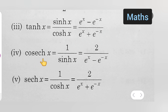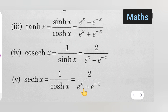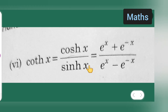The fourth one is cosec hyperbolic x, which is equal to 1 upon sine hyperbolic x, which is equal to 2 upon e raised to the power of x minus e raised to the power of minus x. The fifth one is sec hyperbolic x, which is equal to 1 upon cos hyperbolic x, which is equal to 2 upon e raised to the power of x plus e raised to the power of minus x.